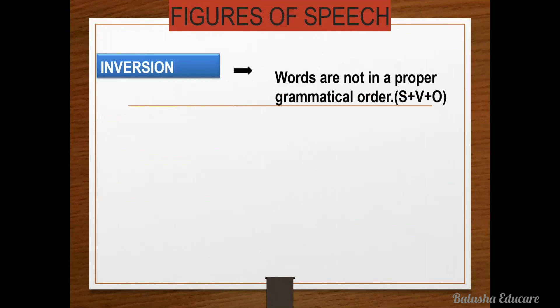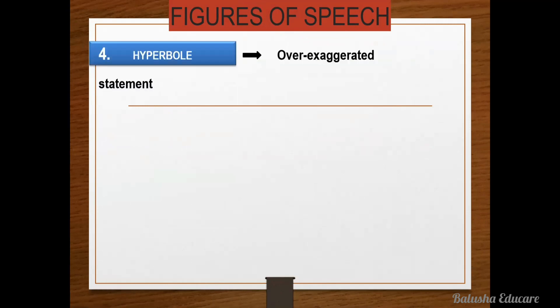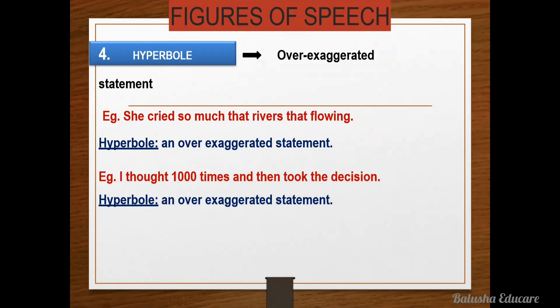The next figure of speech is inversion — words that are not in proper grammatical order. The proper grammatical order is subject plus verb plus object. Now for hyperbole, it is a statement of high exaggeration and over-exaggeration. For example, 'She cried so much that rivers were flowing' — highly exaggerated statement. Another example: 'I thought one thousand times and then took the decision' — an over-exaggerated statement.